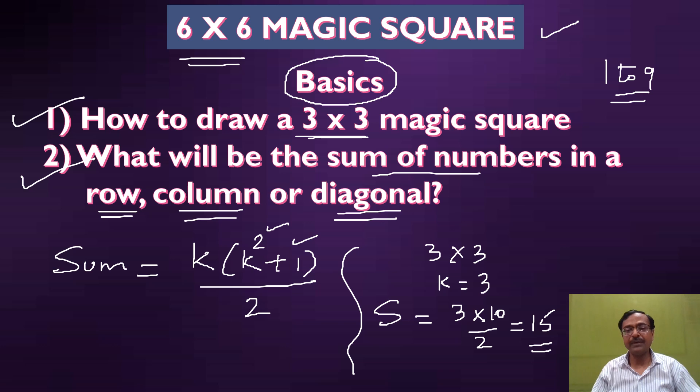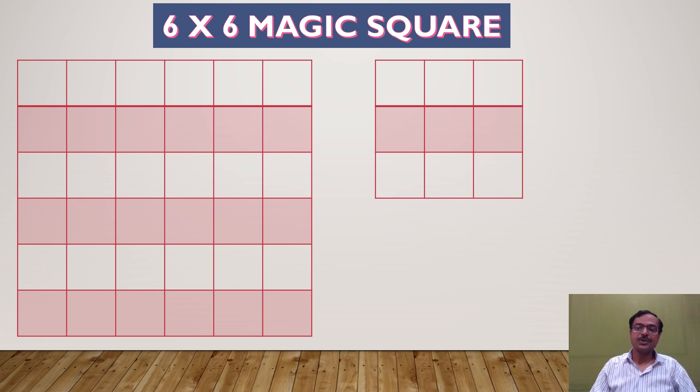The sum of numbers along a row, column, or diagonal will be 15 for a 3 by 3 magic square. Likewise for a 4 by 4 magic square, k will be 4, so the sum will be 4 times 16 plus 1, which is 17 upon 2, giving you 34. You should know this concept before proceeding to the 6 by 6 magic square. Let me explain how to draw a 3 by 3 magic square so you don't have any problem making the 6 by 6.